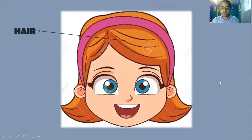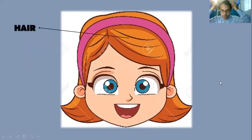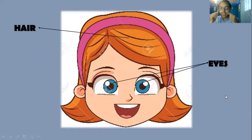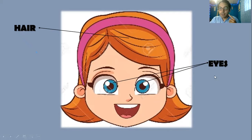So first we have the hair. Tenemos el cabello. The hair. The eyes. Los ojos. Eyes. Y acuérdense que tiene una S al final porque son dos. Si fuera solo uno, diría eye sin la S. Igual que en español.